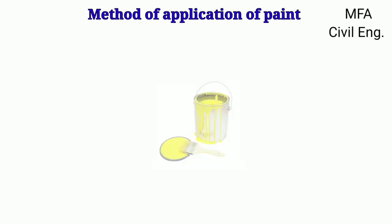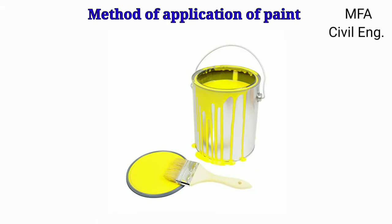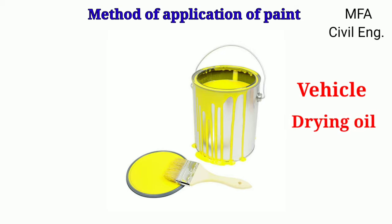Hello everyone, my name is Farzal and you are watching MFA Civil Engineering. Paint is a mechanical dispersion mixture of one or more pigments in a vehicle. The vehicle is a liquid consisting of a non-volatile film-forming material, drying oil, and a highly volatile solvent as a thinner.